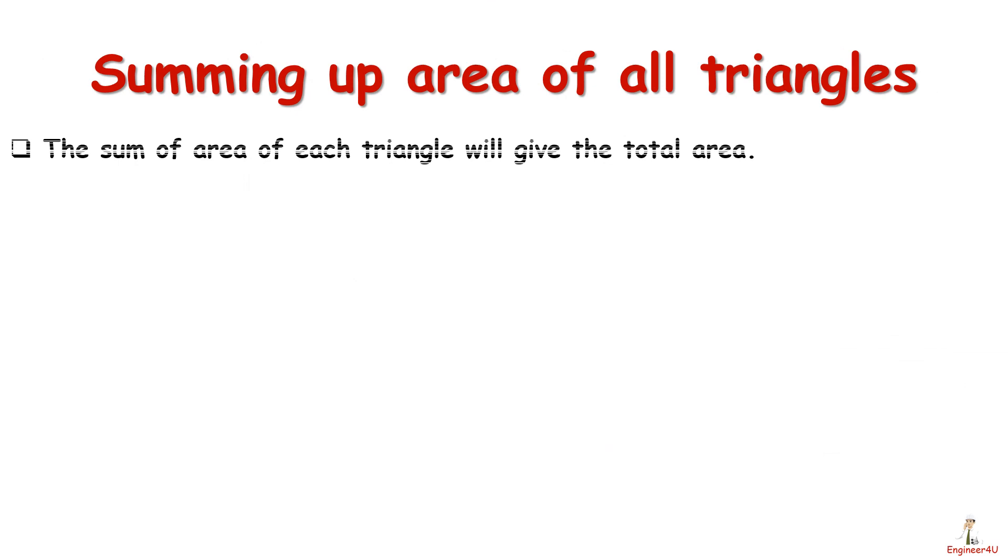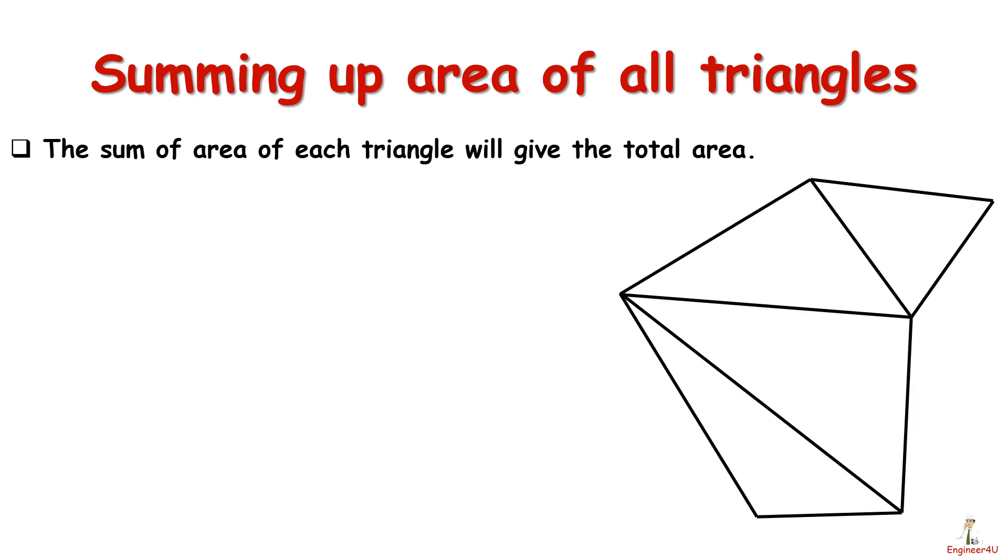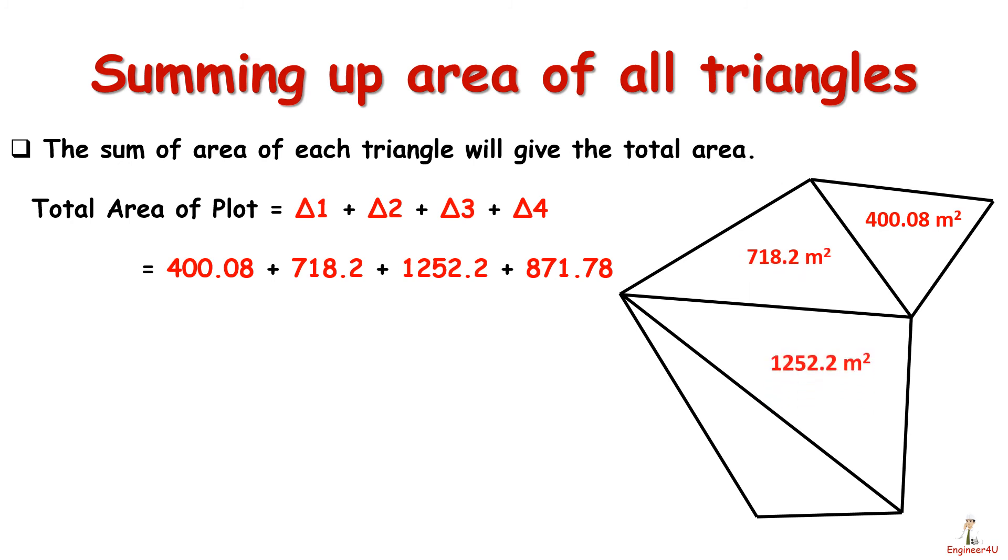The sum of area of each triangle will give the total area. Total area of our plot equals 400.08 plus 718.2 plus 1,252.2 plus 871.78, that is equal to 3,242.26 square meters.